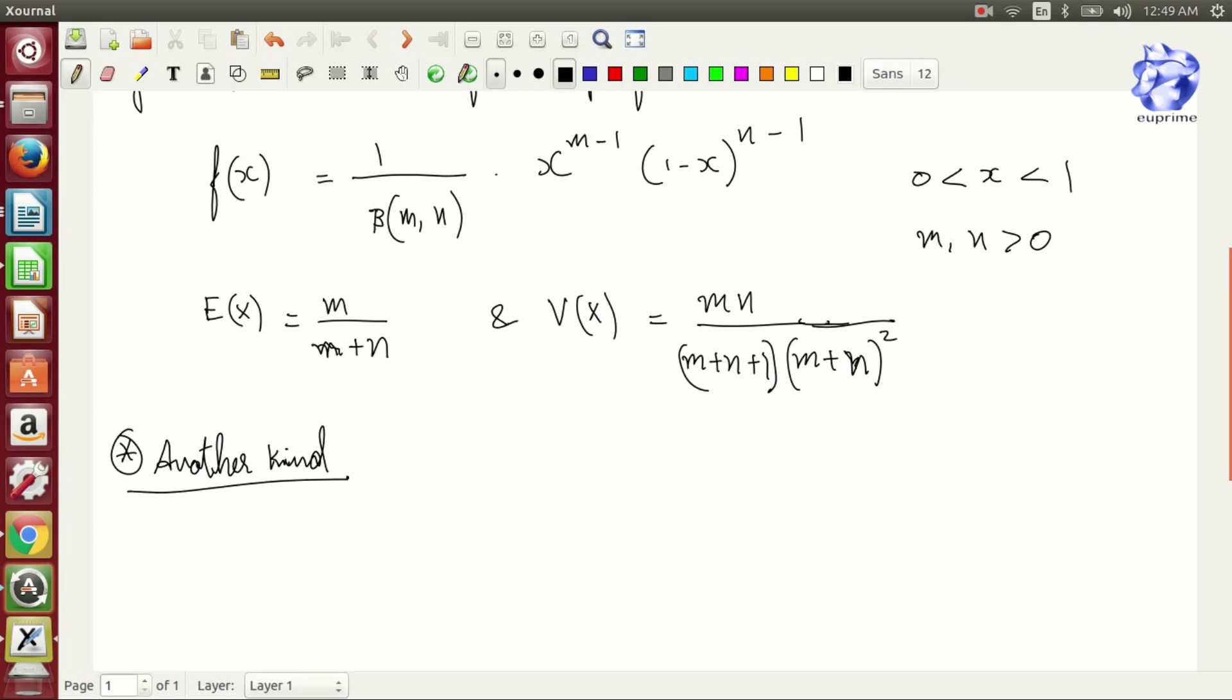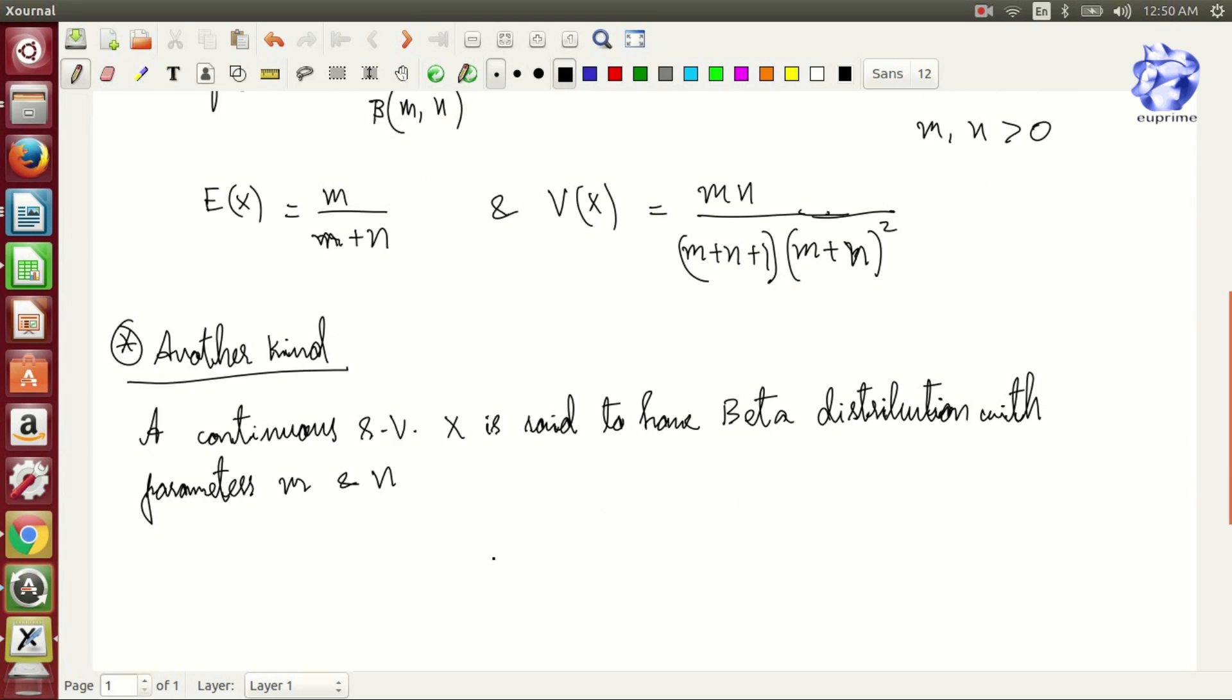Another kind of beta distribution, that is of the second kind, is as follows. A continuous random variable X is set to have beta distribution with parameters m and n. The probability density function is: